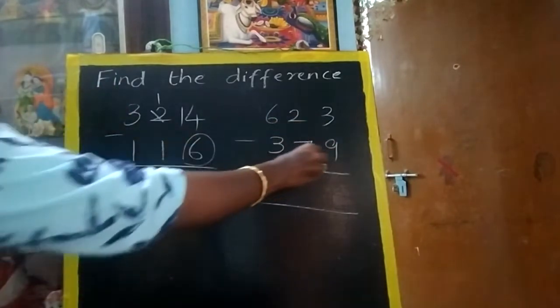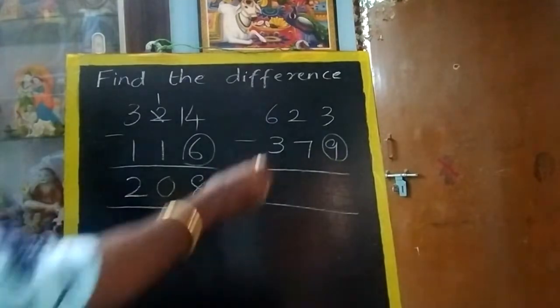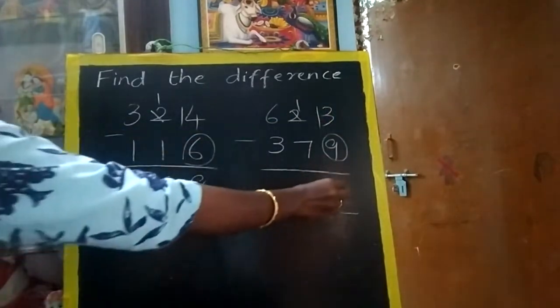Now check out. 3 and 9. Should we borrow? Yes, we have to borrow. Give 1. 13 minus 9 equals 4.